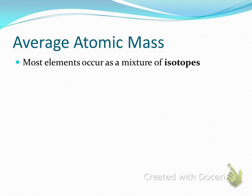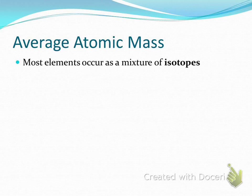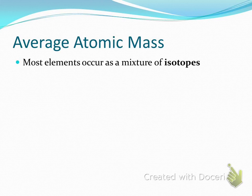Today we're going to start looking at something called average atomic mass. The average atomic mass is what you see on the periodic table. When you look for the mass number of something, the average atomic mass is what you're seeing — which is a mixture of all of the isotopes that a particular element could have.